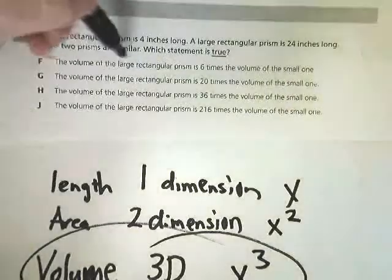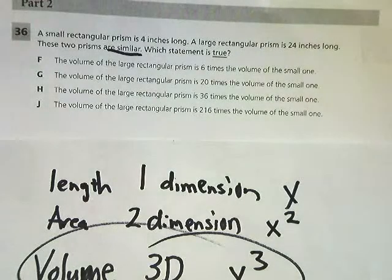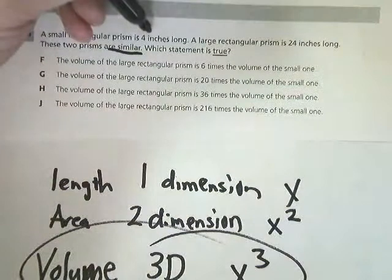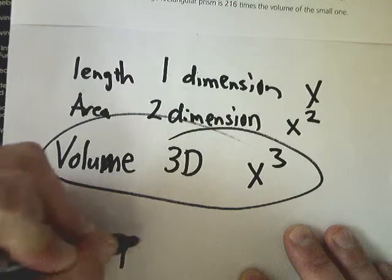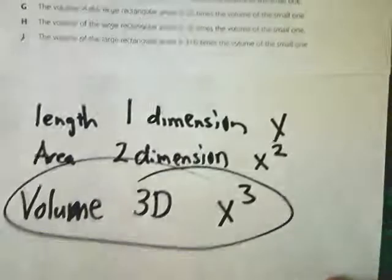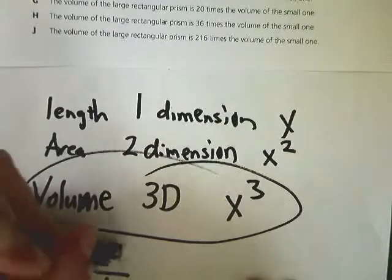The other thing we have to talk about is the term similar. Similar means the proportional relationship of the sides are the same. So in my original small rectangular prism, I have a 4 inch long side. In the larger one, like it says up here, it's 24. So the relationship or the proportion between those two is 6. 6 inches in the large one is the same as 1 inch in the smaller one.